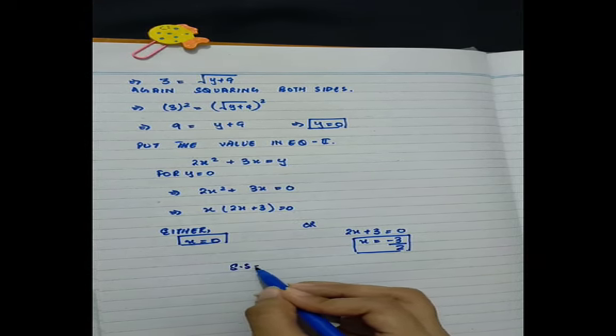2x²+3x = 0. x is common. x(2x+3) = 0. Either x = 0 or 2x+3 = 0, so x = -3/2. Solution set is {0, -3/2}.